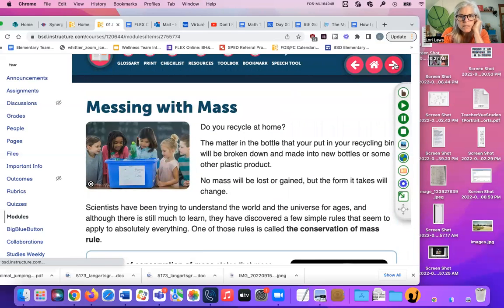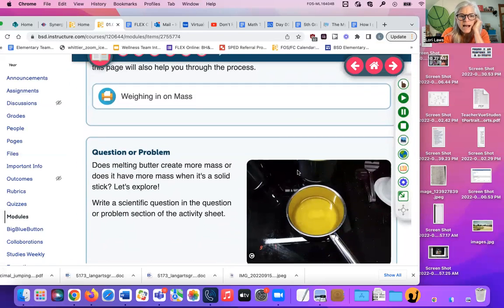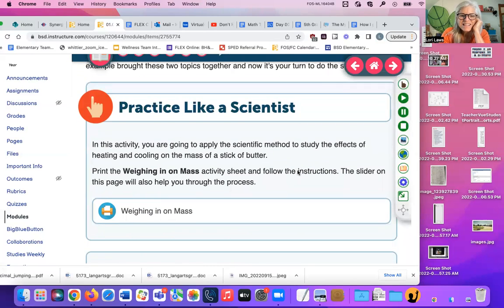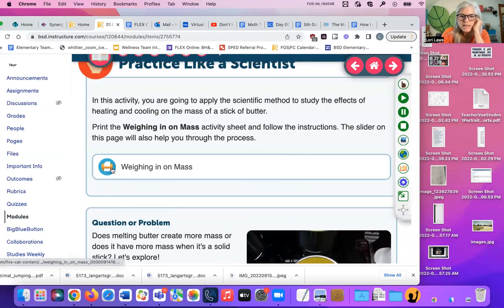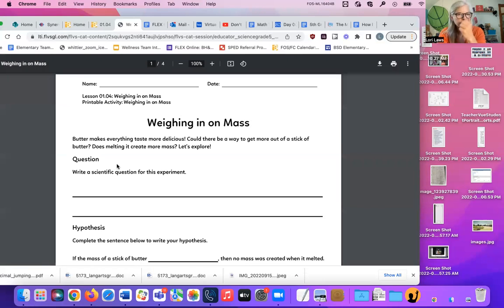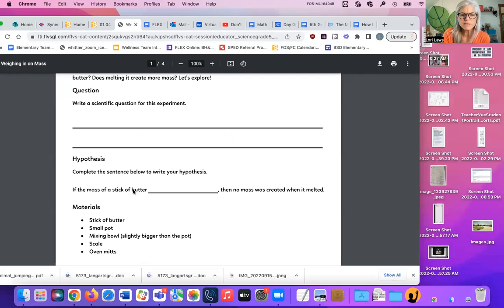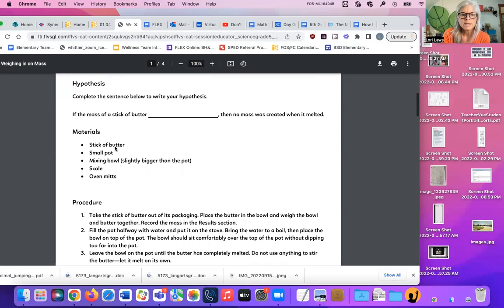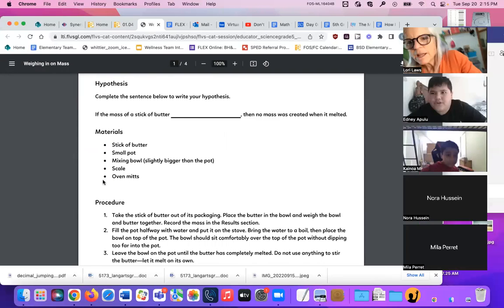I'm looking for the butter melting experiment. Where is it? Practice like a scientist. Ah, here we go. This is what we wanted to do. It says print the weighing in on mass activity sheet and follow the instructions. The slider on this page will also help you through the process. Let's see what it says. Butter. Butter makes everything taste more delicious. Could there be a way to get more out of a stick of butter? Does melting it create more mass? Write a scientific question for this experiment. And I think this is your question. Does melting butter create more mass? Complete the sentence below to write your hypothesis. If the mass of a stick of butter weighs the same, then no mass was created when it melted. You guys want to do this experiment with me right now? Yeah, sure. Here we go. We're going downstairs.